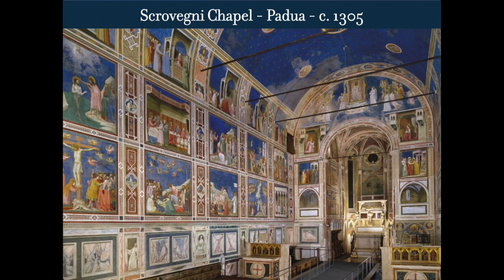Why do some chapels have family names? When a church is being built, a wealthy family gives money and essentially pays for construction of that chapel. The Scrovegni family paid for this side chapel — it wasn't theirs, but it's named after them — and they were able to hire the artist they wanted. So they hired this up-and-coming artist named Giotto di Bondone to do it, essentially like buying a pew or a stained glass window, but for an entire chapel.